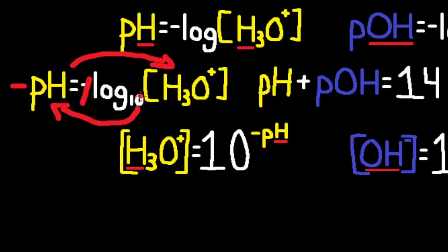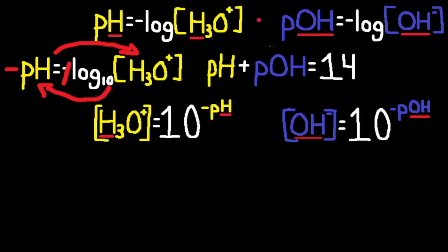If that's confusing, you can remember it as a full circle. So we have 10 to the power of negative pH, and that is equal to H3O+, going in a circle. 10 to the power of negative pH equals H3O+. And you would do the same thing for pOH.